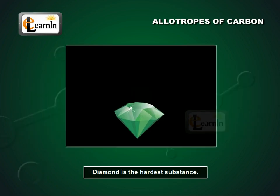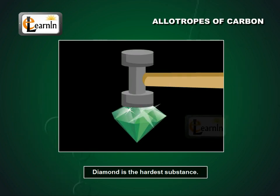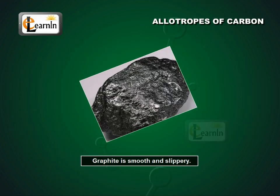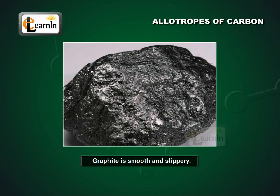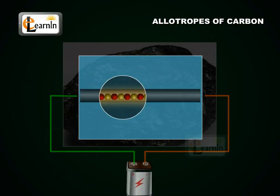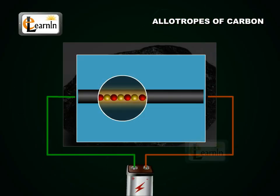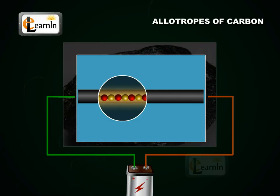Diamond is the hardest substance known, while graphite is smooth and slippery. Graphite is also a good conductor of electricity, unlike other nonmetals.